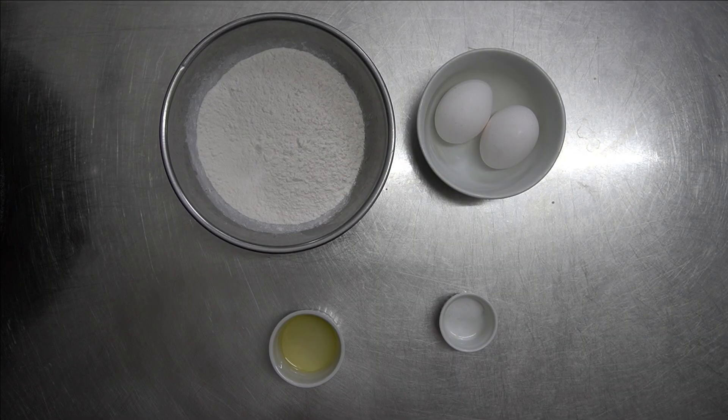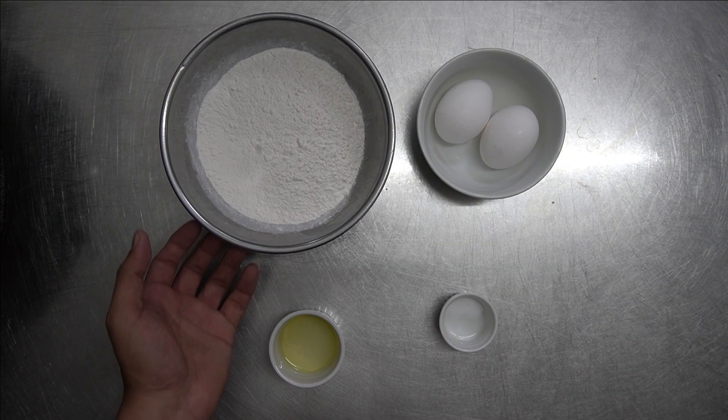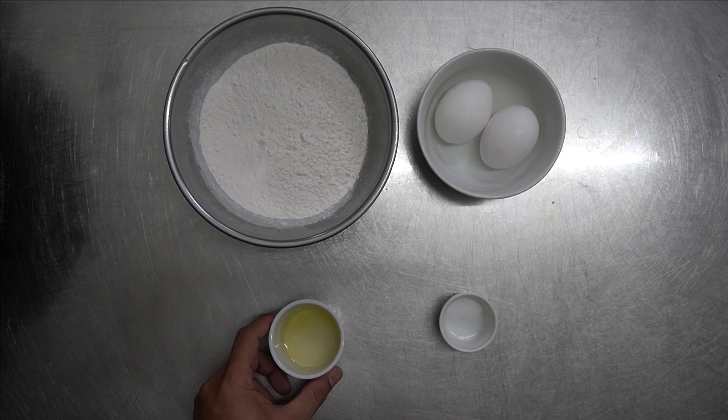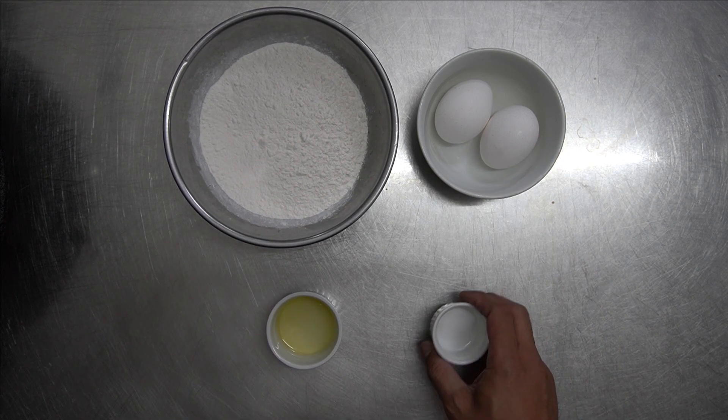Welcome back, I'm Chef Elmer. Today we're going to prepare fresh pasta. Let's start with the ingredients. For the fresh pasta we need all-purpose flour, two eggs, oil, and salt.